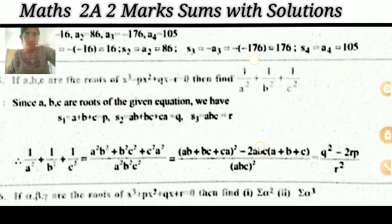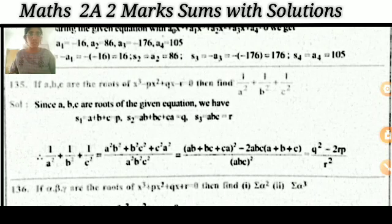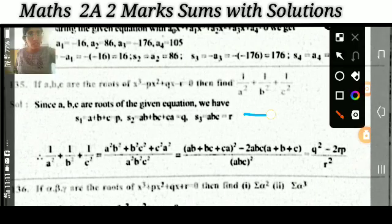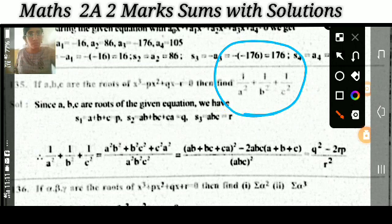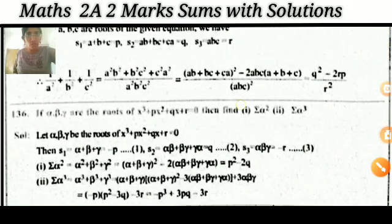If a, b, c are the roots of the equation x³ - bx² + qx - r = 0, then find the value of 1/a² + 1/b² + 1/c². This is a most important question.